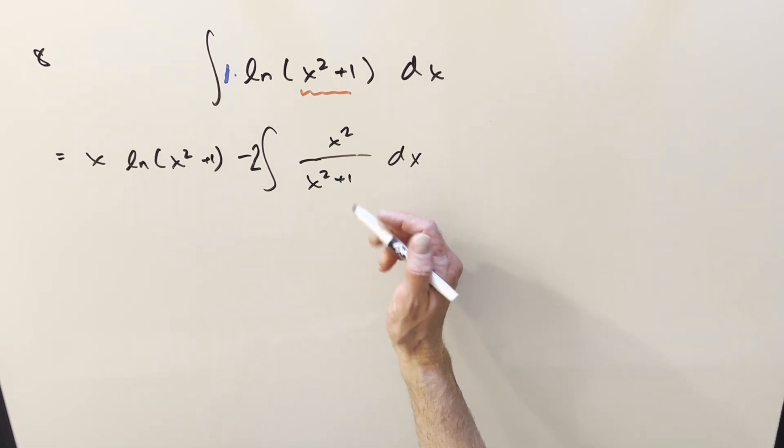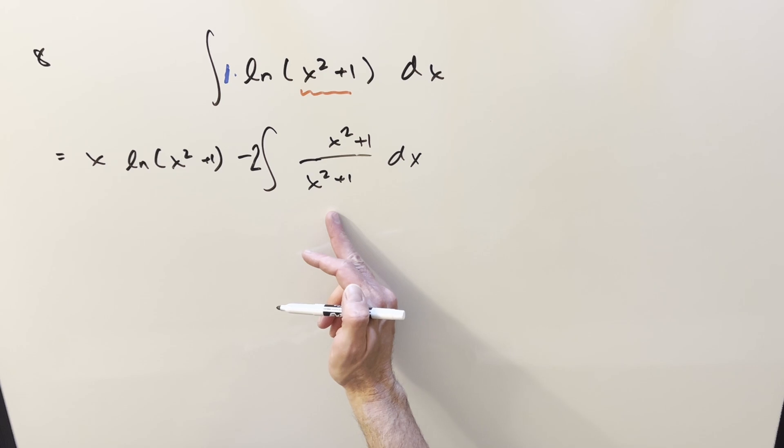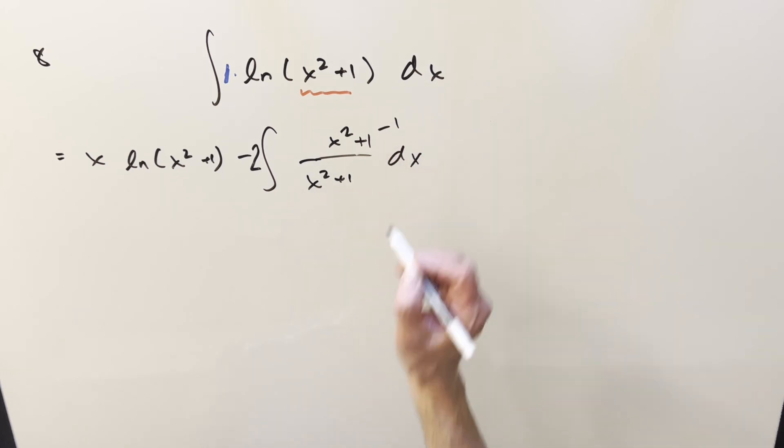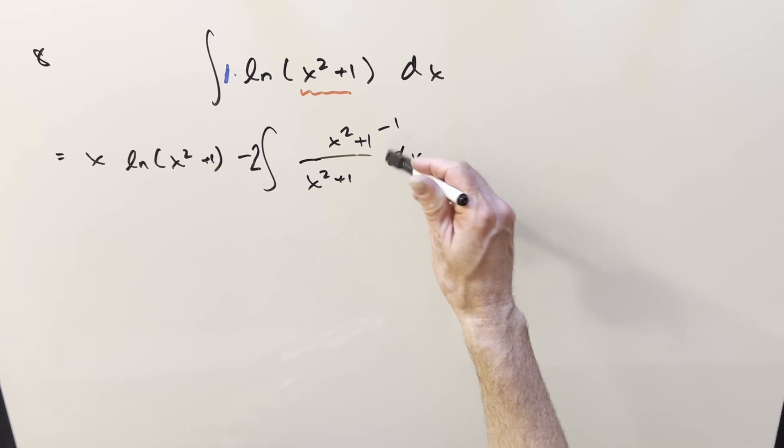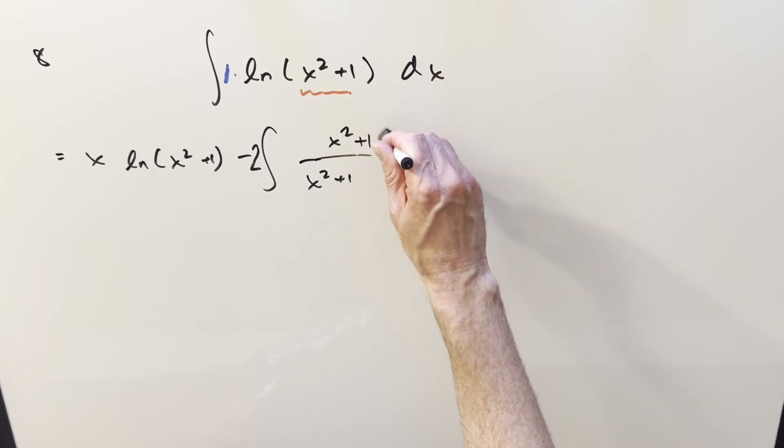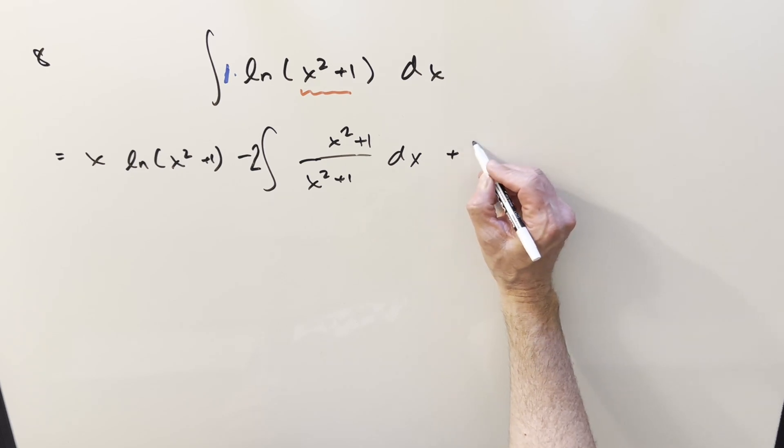And then for x squared, if I just add a plus 1, that way the whole integral is 1. I don't want to change it, so I'll subtract off 1. So we're just adding 0. But then for this minus 1, let's break this off and create a second integral. So minus 1 times minus 2 is going to give me a plus 2.